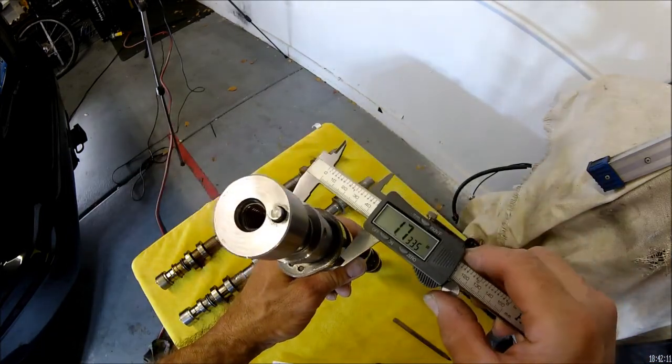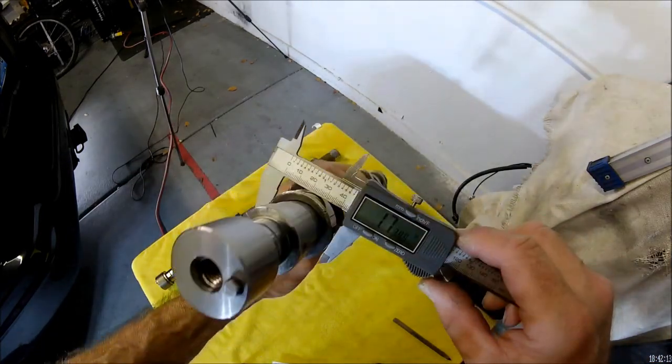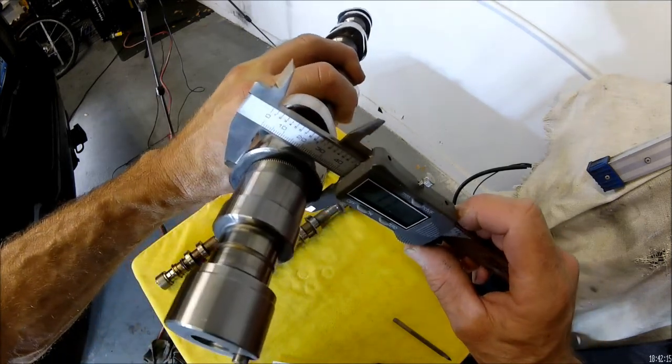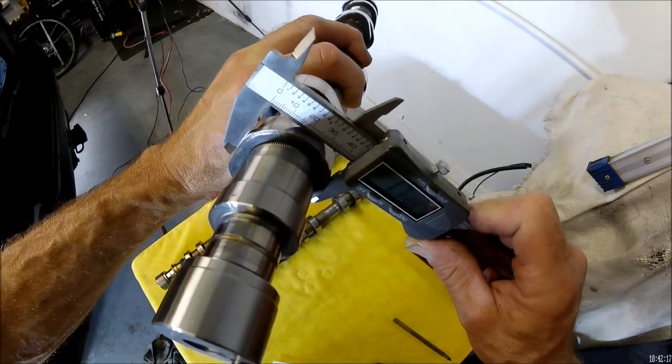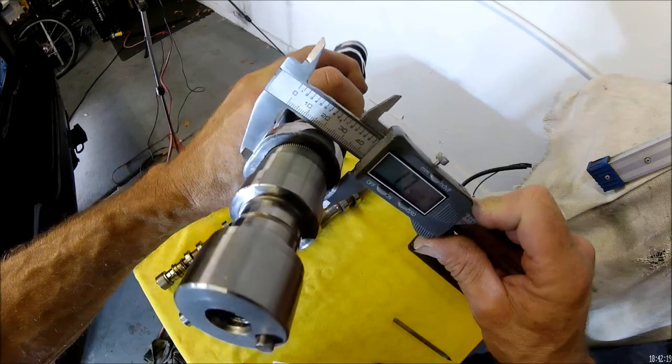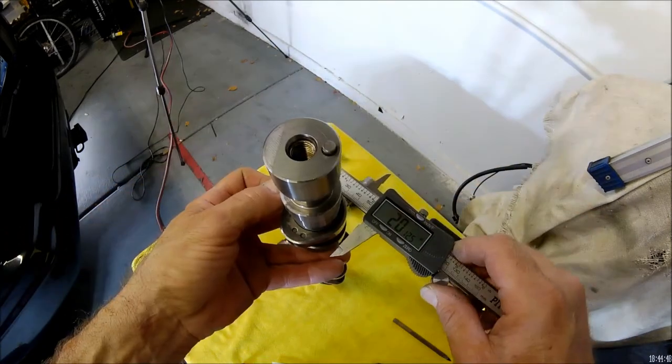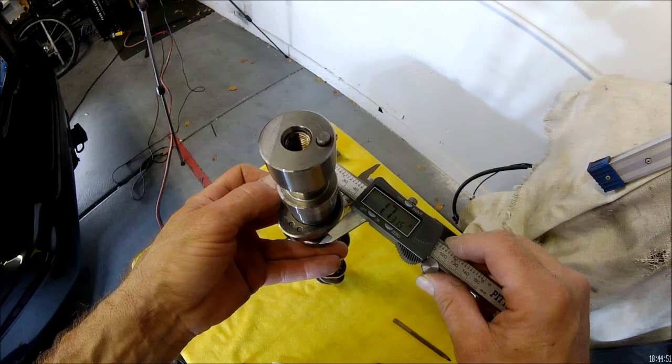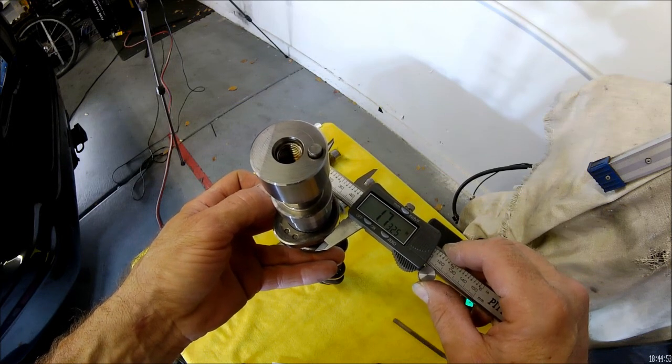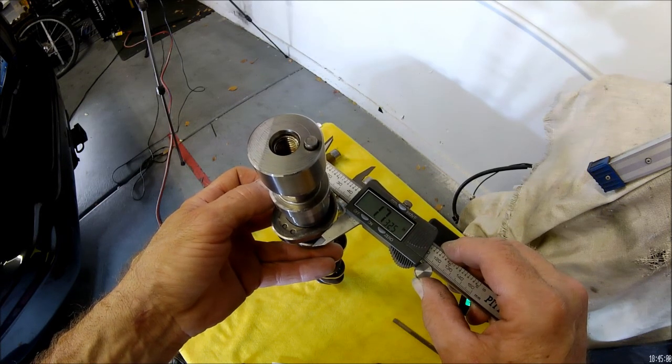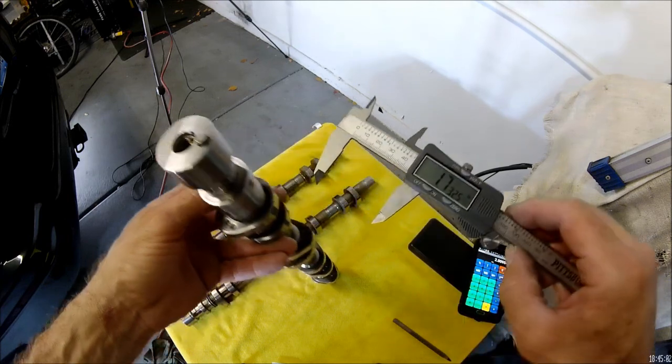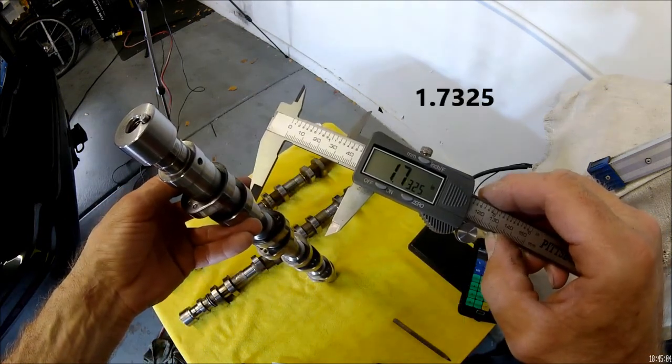Okay, now we're going to measure the base circle. And make sure you're getting your caliper in there nice and square from side to side. And I got a 1.7325.